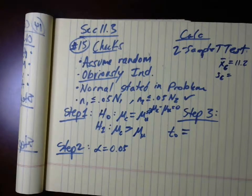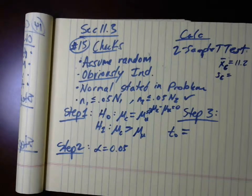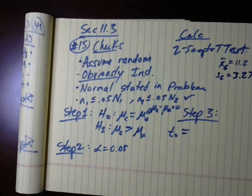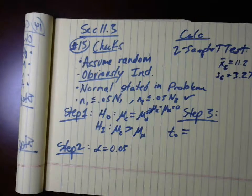I put all my values into list one and calculated the one-var stats. The sample standard deviation s_c = 3.27. Notice I did not use sigma because this is not a population - I used s because it's a sample. If the calculator doesn't know whether it's a population or sample, you have to know which variable to choose.